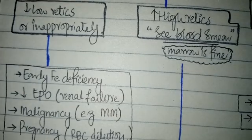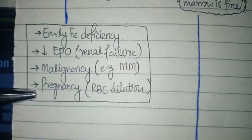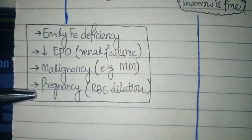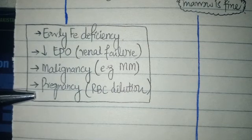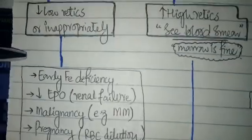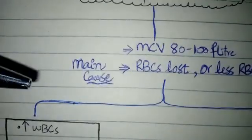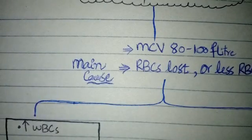It can also occur due to pregnancy. In pregnancy, RBC dilution occurs in which the plasma comparably has less RBCs relative to the plasma volume of the pregnant woman. This can also lead to low reticulocyte count, which can present as normocytic anemia.